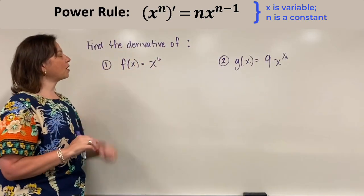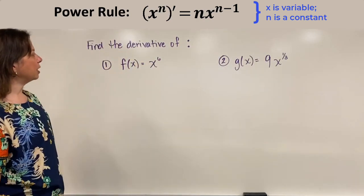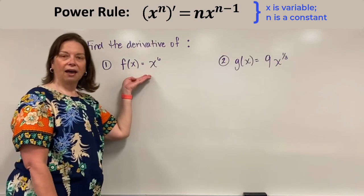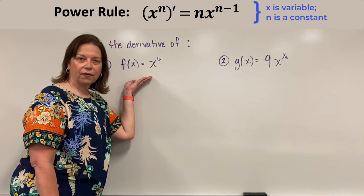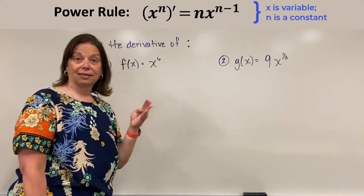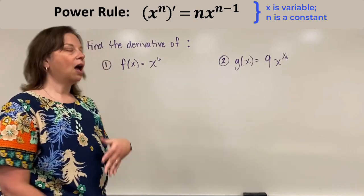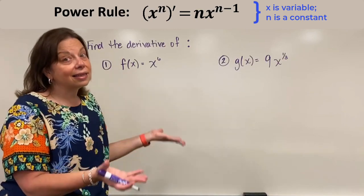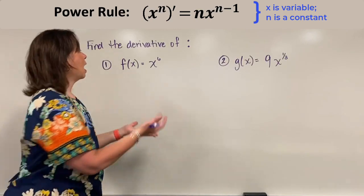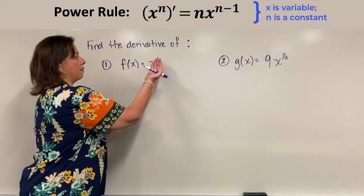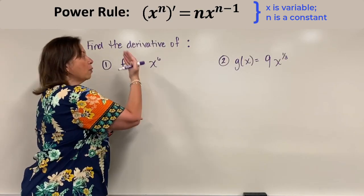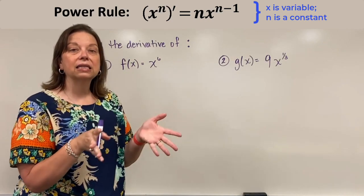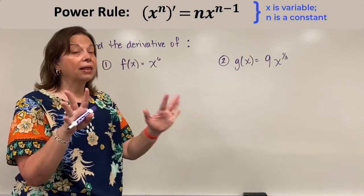So check this out — I've got this particular example for you. If we have the function f of x equals x to the sixth, I have to notice this is a power function. I certainly have a power, an exponent that's a constant number. By the way,